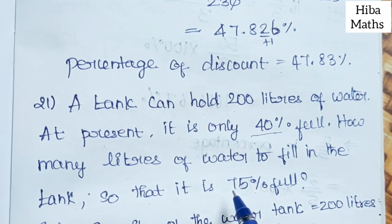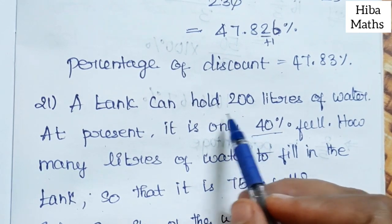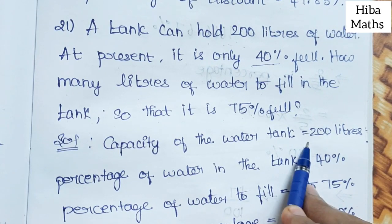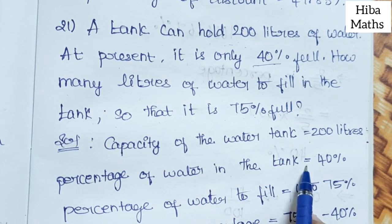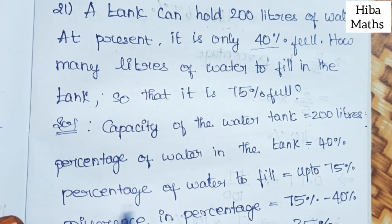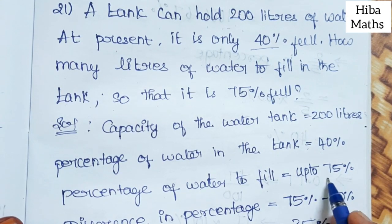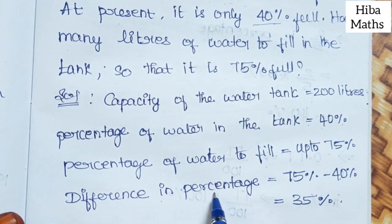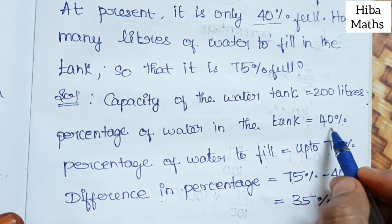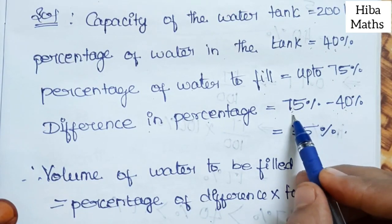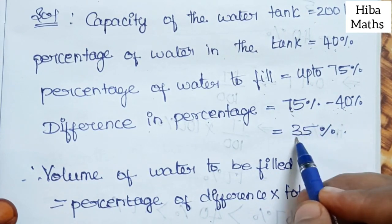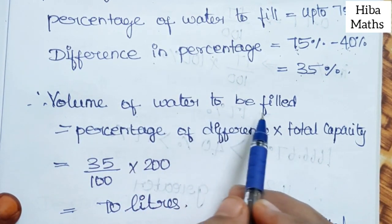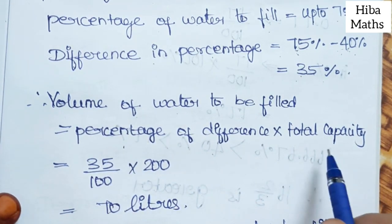Solution: Capacity of the water tank is 200 liters. Percentage of water in the tank currently is 40%. We need to fill it to 75%. The volume of water to be filled equals the percentage difference multiplied by total capacity.